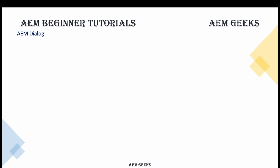How do we create component dialogue? Remember the tutorial where I explained sling resource type and sling super resource type properties — those are very important and you'll be using those throughout your AEM learning. To create a dialogue, we create a node of structure type cq:dialogue. The name of this node should be this, and we add a property sling resource type pointing to this component. This HTML will pop up when you add this component, but it won't have any fields yet.